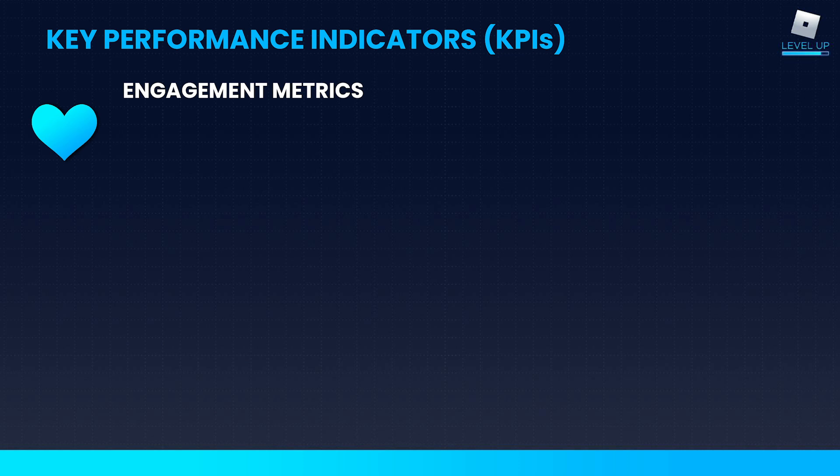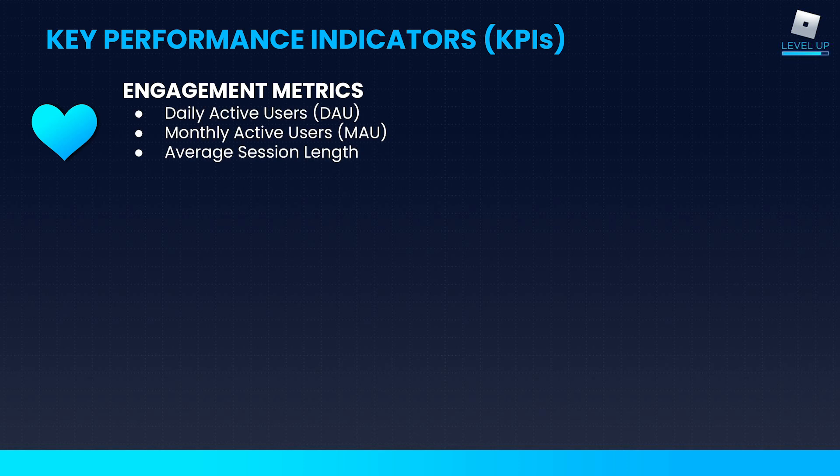First, we have engagement metrics. There are a few that fall under this category. They are daily active users, or DAU — the number of users that are in your game for a given day. Similarly, we have monthly active users, which are the unique number of users in your game over the course of a given month. And then finally, we have average session length.